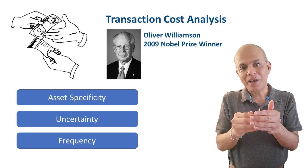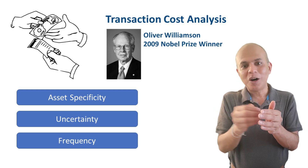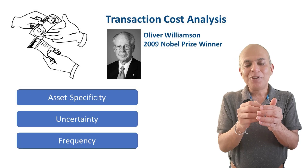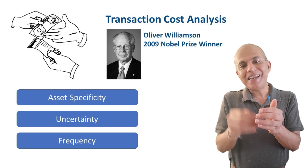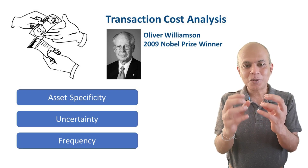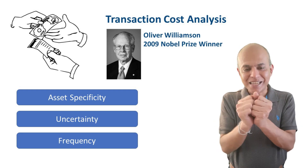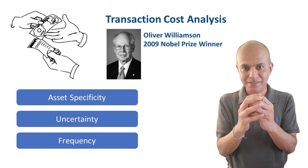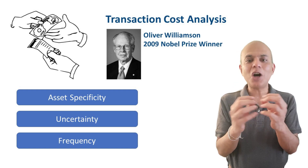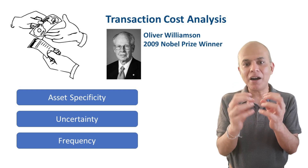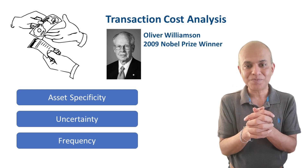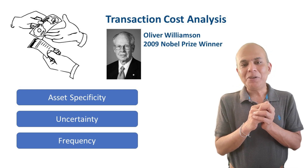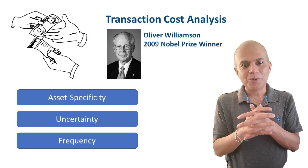So even if the supplier wants to move out, there is already an investment made which prevents them from doing so. This creates a stickiness. The asset specificity creates a stickiness which does not let the parties break out of the relationship — and this stickiness is applicable even to customers.